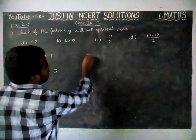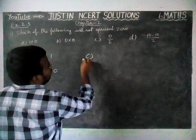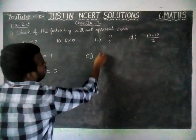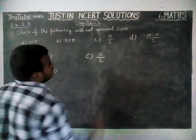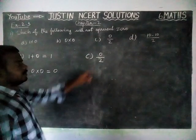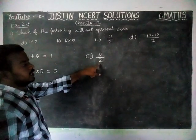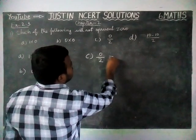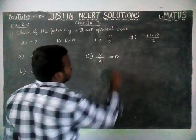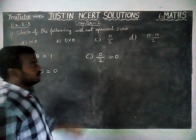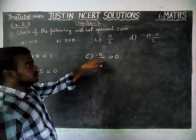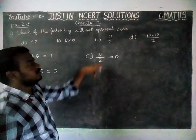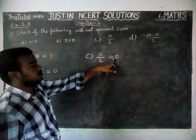Option C: when we are dividing 0 by any number, we will get 0 only. So dividing 0 by any number gives us 0.